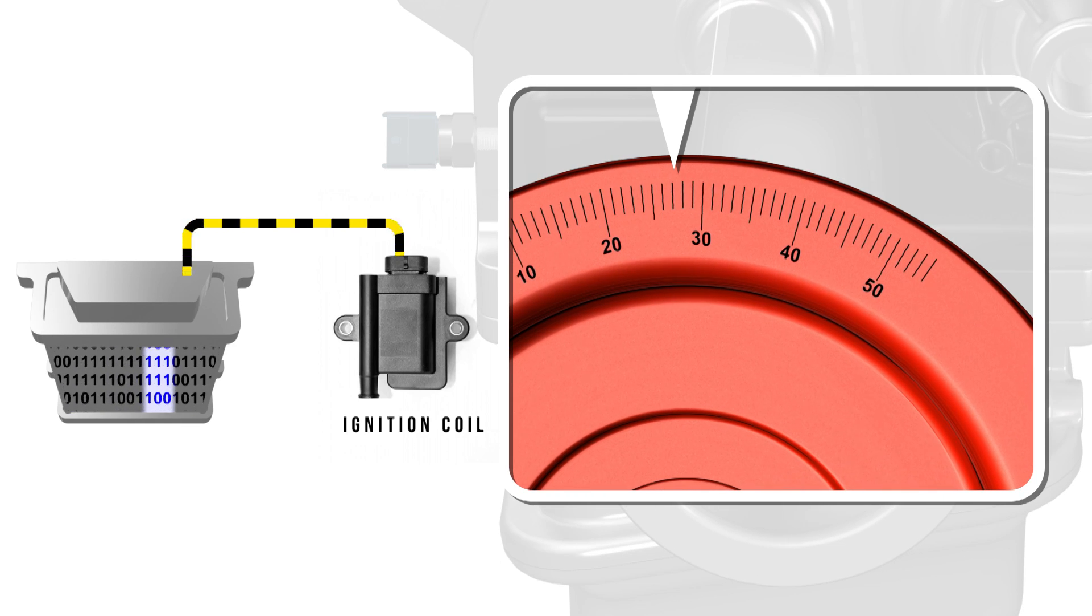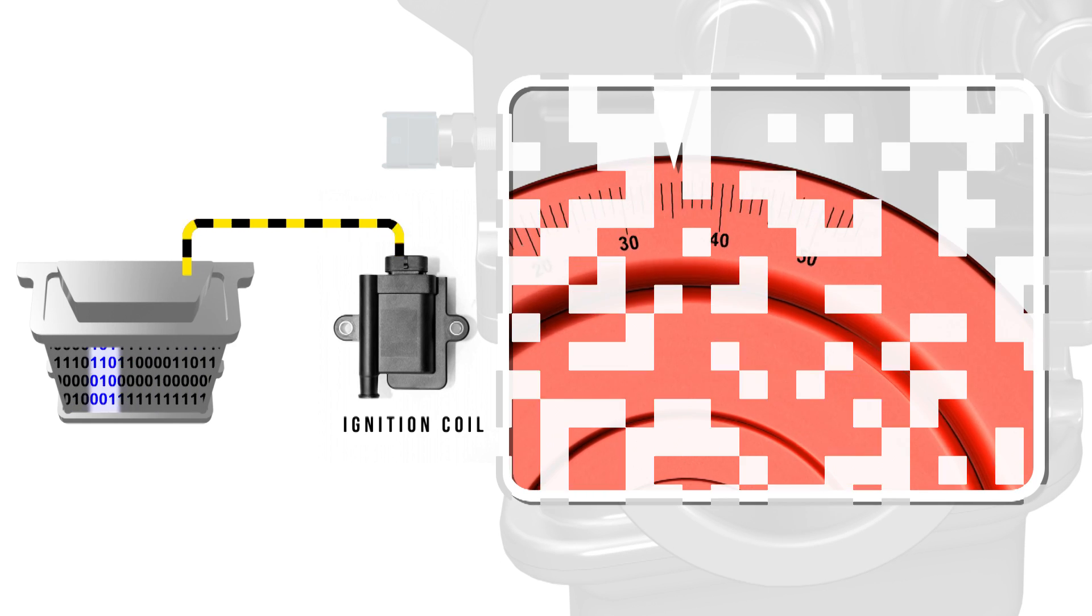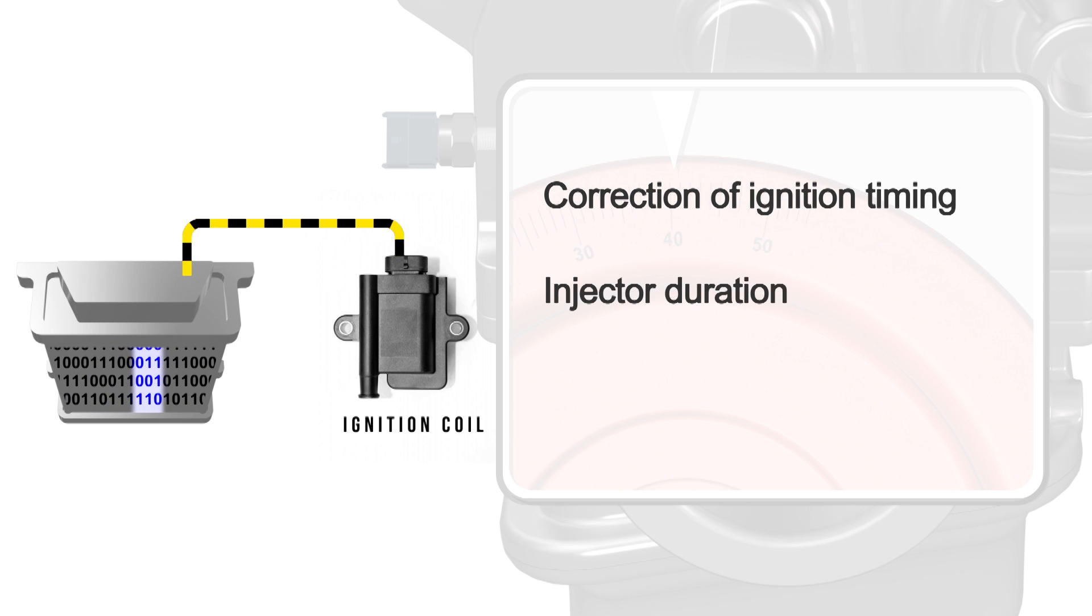Using a knock sensor as part of the ECM's ignition strategy allows for correction of ignition timing and injection duration, preventing harmful detonation.